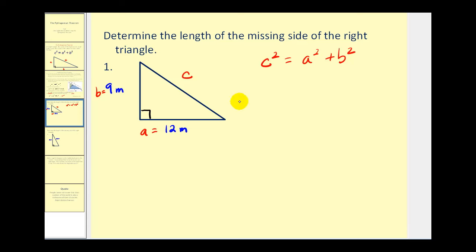Let's go ahead and substitute these values into the theorem and then we can solve for C. So we'd have C squared equals A squared, or 12 squared, plus B squared, or 9 squared. So we have C squared equals 12 squared is 144, 9 squared is equal to 81. So we have C squared equals 225.